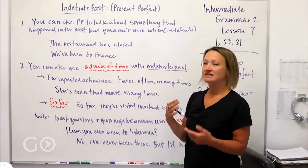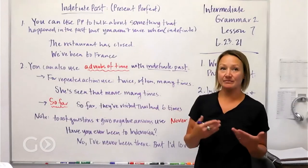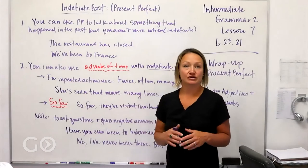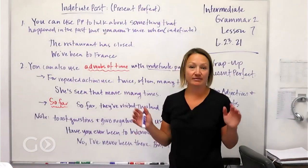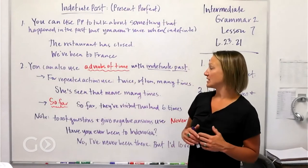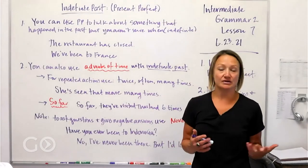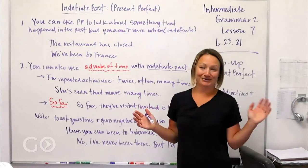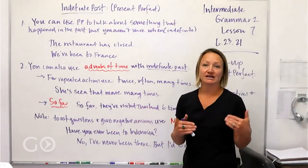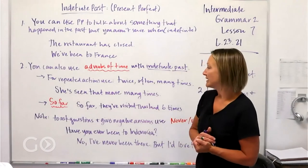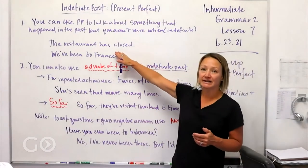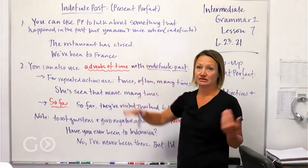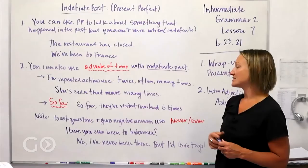'I've been to France' is something in my past and it's not a definite time, so it's an indefinite past. 'The restaurant has closed' means it doesn't open anymore, maybe the business stopped. I'm not sure when — maybe two weeks ago, maybe five years ago — but the restaurant has closed. It's very similar in meaning to the simple past: 'the restaurant closed' or 'it closed.'